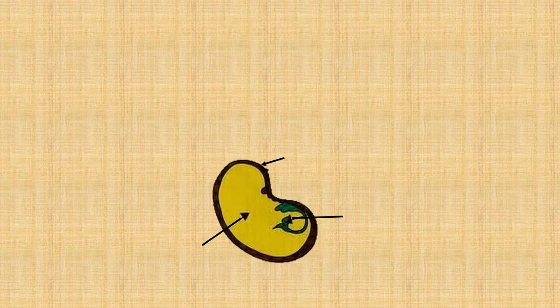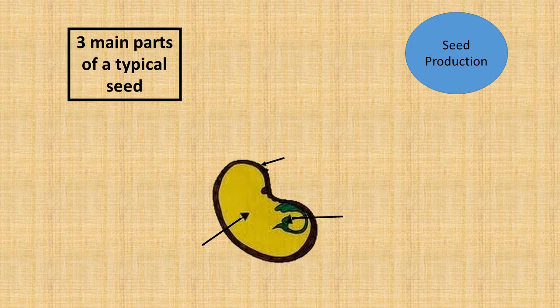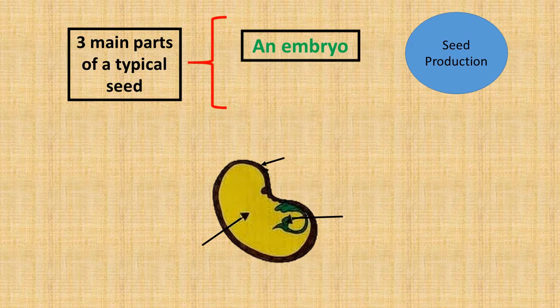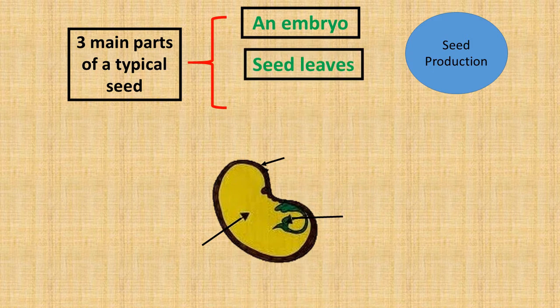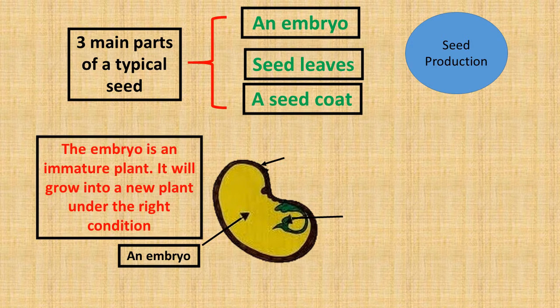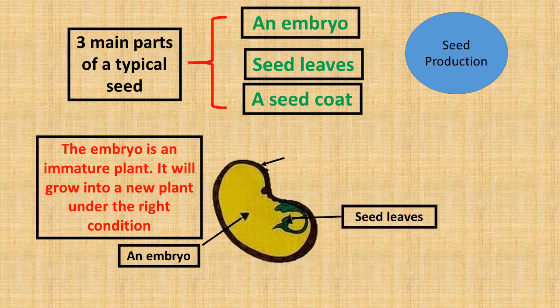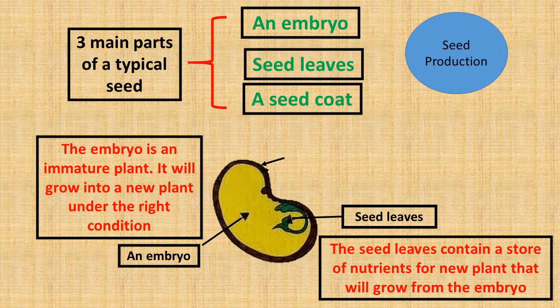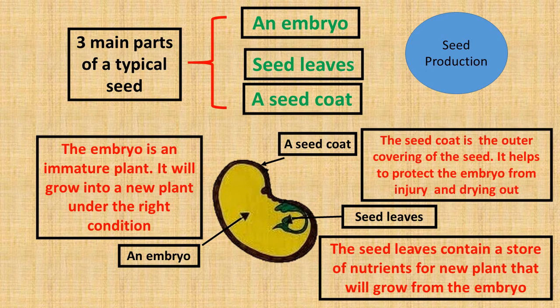Seed production: the three main parts of a typical seed are the embryo, seed leaves, and a seed coat. The embryo is an immature plant that will grow into a new plant under the right conditions. The seed leaves contain a store of nutrients for the new plant that will grow from the embryo. The seed coat is the outer covering of the seed; it helps to protect the embryo from injury and drying out.